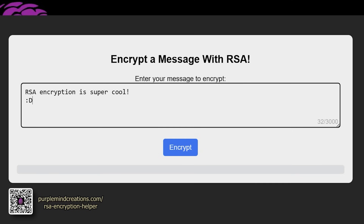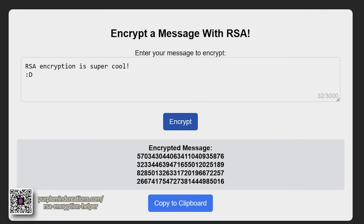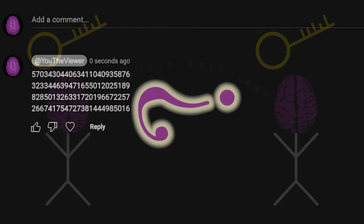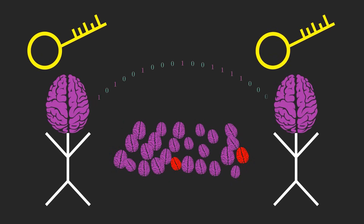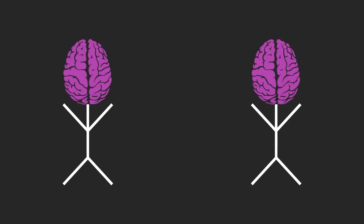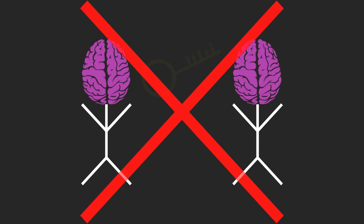By the end of this video, you will be able to post a public message in the comments section that no one else can decipher except for me. You might hear this and wonder, how is that possible? How on earth could you send a public message that no one but a single person can decipher, without even having met that person in advance to share any secret information?